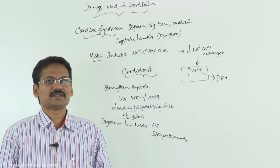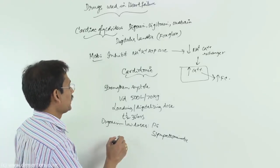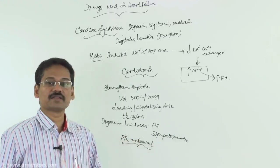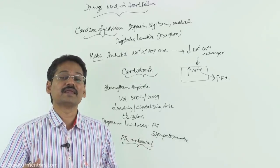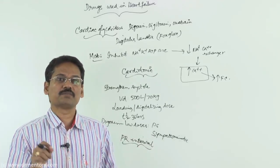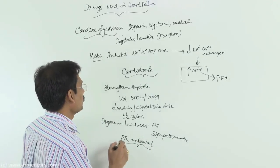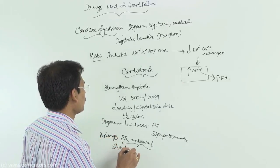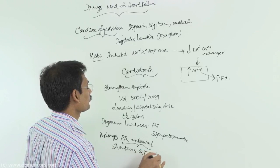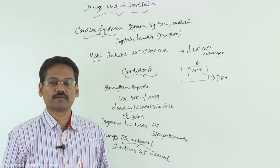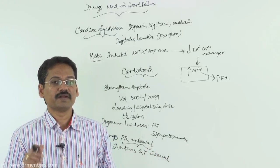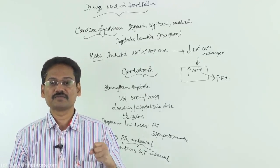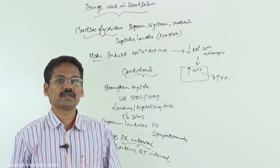Other ECG findings with digoxin include prolongation of the PR interval, reflecting increased AV nodal refractoriness, and shortening of the QT interval. The QT interval represents the total ventricular action potential. Because digoxin strengthens and shortens systole, there is shortening of the QT interval. At high doses, digoxin causes stimulation of central sympathetic outflow, producing sympathomimetic action.